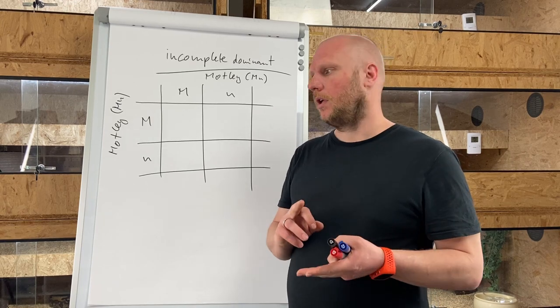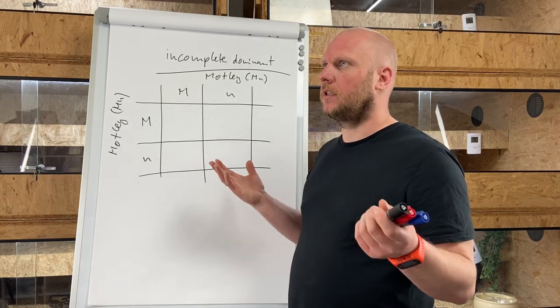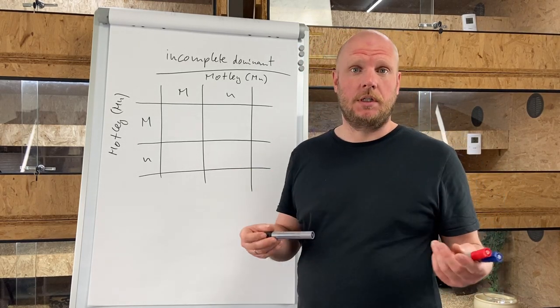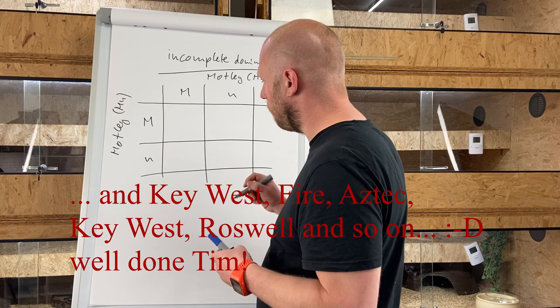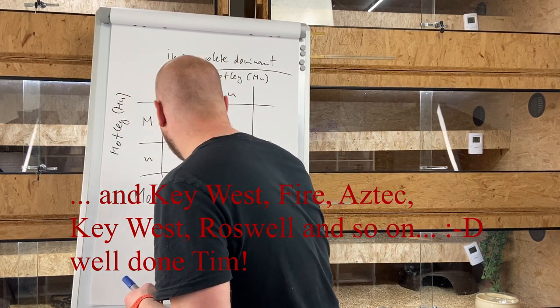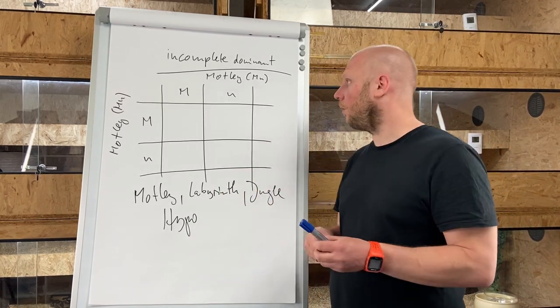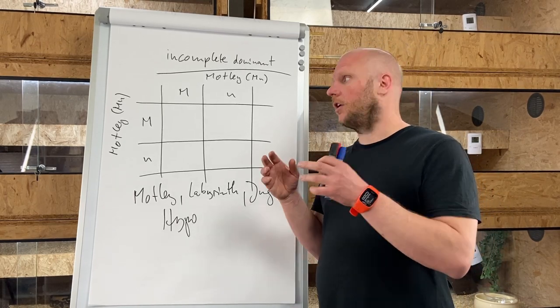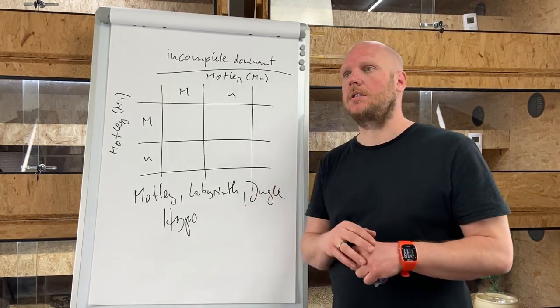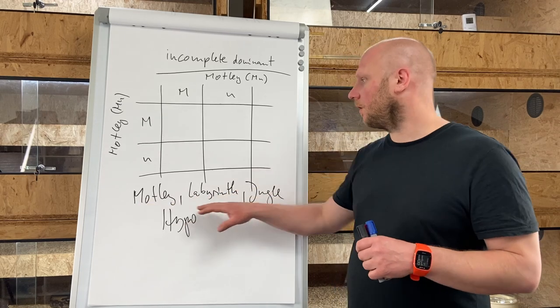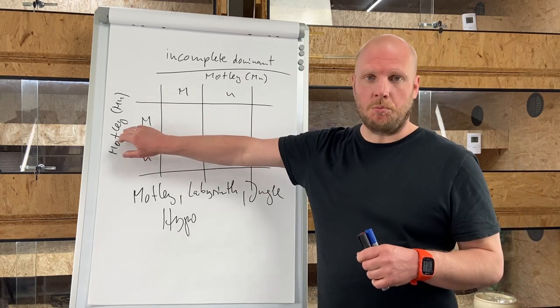Incomplete dominant morphs are, for example, motley, jungle, hypo. I think that's the main morphs to mention. For all these morphs this works the same. So the first question as always should be not how is the motley passing genes to the babies, it is what kind of inheritance is the morph I like to work with.